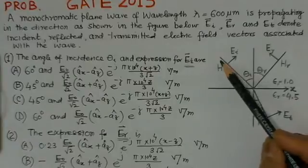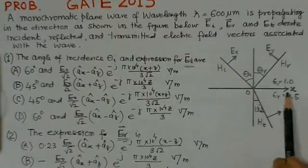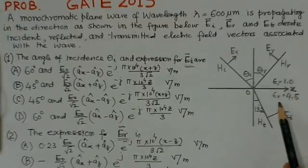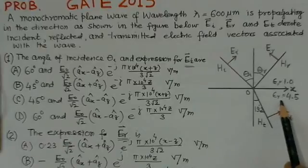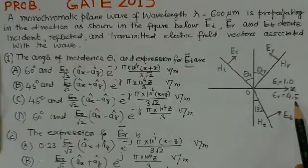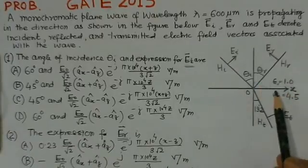This we find here. This is a dielectric boundary. There is one medium with ε_r = 1, that is basically free space, and there is another medium with ε_r = 4.5. And this is the corresponding boundary for these two dielectrics.